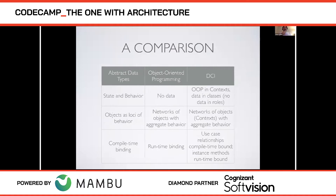I want to start with a short table comparing three things. First, abstract data types — things like complex numbers, windows, or files. These are a programming concept; they encapsulate state and behavior. Objects are the locus of aggregate behavior, like a string encapsulating all behaviors associated with strings. They tend to be compile-time bound, so there's no polymorphism.